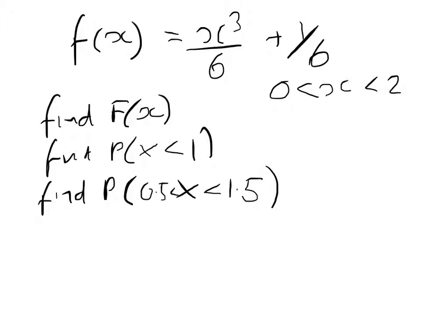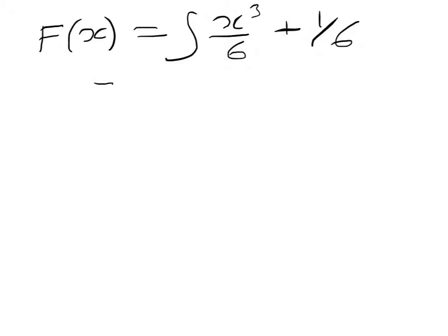So we need to start off by calculating F of x. So F of x is going to equal the integral of x cubed over 6 plus 1/6. If we integrate x cubed, we get x to the power 4 over 4, so the 4 will go on the bottom, but you've got the 6 as well. So 4 times 6 is 24. Then you've got plus x over 6 plus the constant of integration.